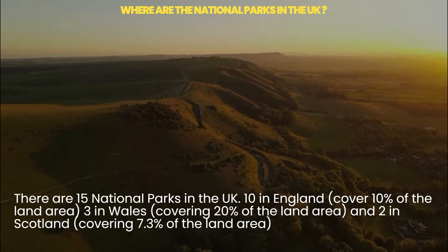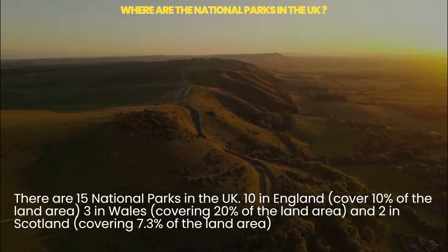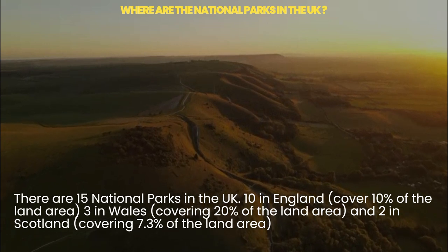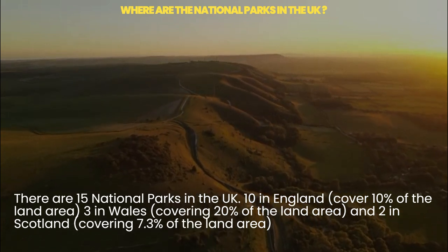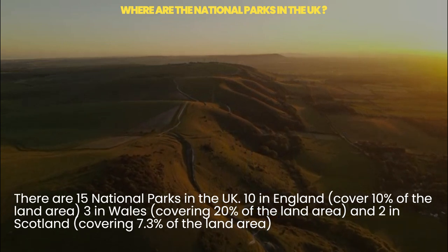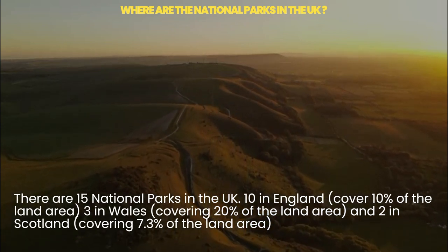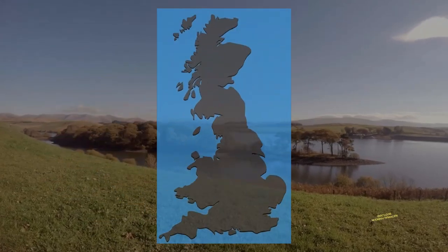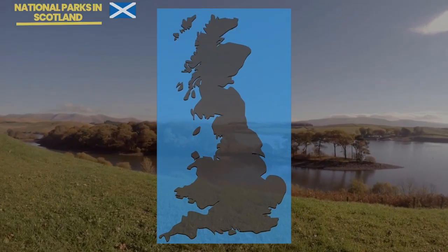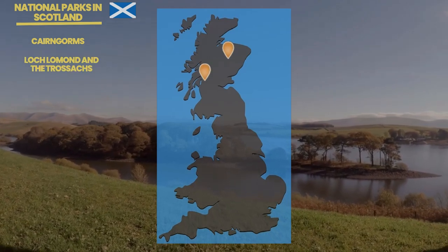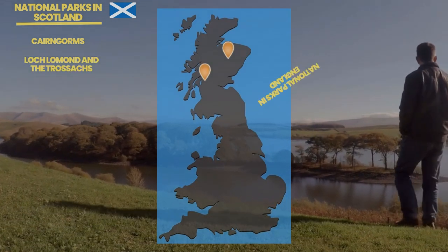There are 15 national parks in the UK: 10 in England, covering 10 percent of the land area; three in Wales, covering 20 percent of the land area; and two in Scotland, covering 7.3 percent of the land area. The national parks in Scotland are the Cairngorms and Loch Lomond and the Trossachs.